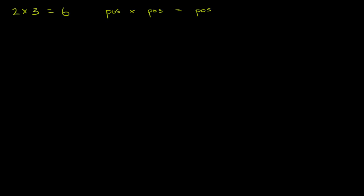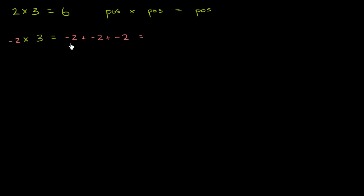Now let's mix it up a little bit and introduce some negative numbers. So what happens if I had negative 2 times 3? One way to think about it is that you could view this as negative 2 repeatedly added three times. So this could be negative 2 plus negative 2 plus negative 2, which would be equal to negative 6 — because negative 2 plus negative 2 is negative 4, plus another negative 2 is negative 6.